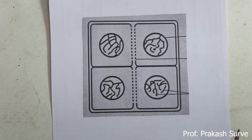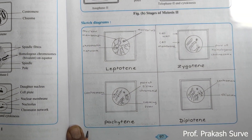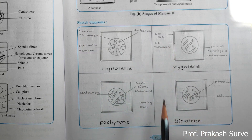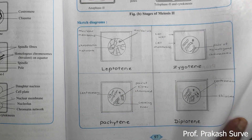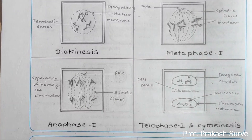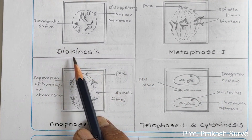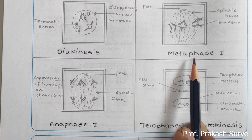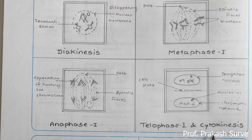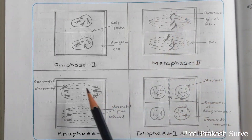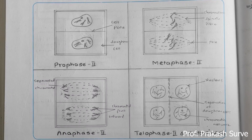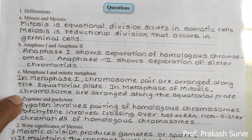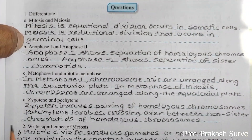Now we'll see what to write for the answers of the questions. In the answer box you have to draw the diagrams of leptotene, zygotene, pachytene, diplotene, and diakinesis, then metaphase one and telophase one as well as cytokinesis, and in the next box: prophase two, metaphase two, anaphase two, telophase two, and cytokinesis.